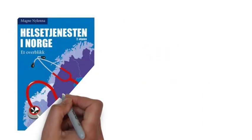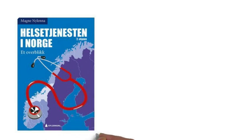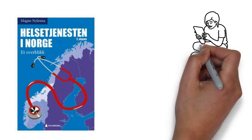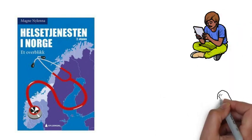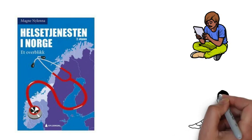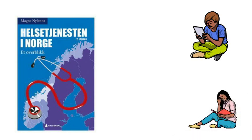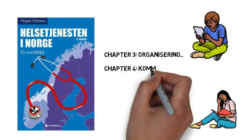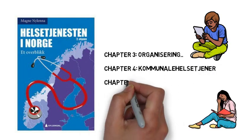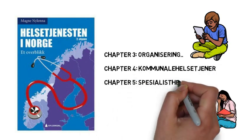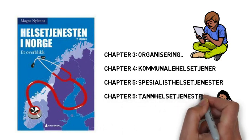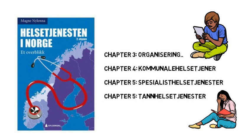The other book's name is Hilsefionester in Norway. Again, it's important to read the whole book thoroughly, but the most important chapters from the exam's perspective are chapter 3, which is about organization of the health system, and chapters 4, 5 and 6, which are about communal, special health services and dental health services respectively. In these chapters you will read about the services provided under these domains.